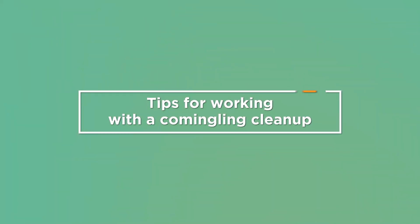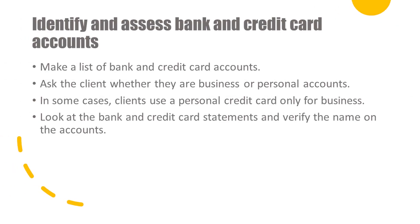Let's go over some tips for working with a commingling cleanup. You'll need to identify and assess the bank and credit card accounts. Make a list of all of the bank and credit card accounts being used by your client. Ask your client whether the accounts are business or personal. In some cases, clients use a personal credit card only for business, and that's okay as long as they're using it only for business. Look at the bank and credit card statements and verify the name on the accounts. Sometimes clients think that they're using an account for business, but it's really a personal account.